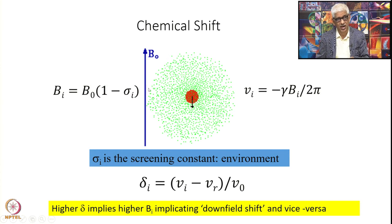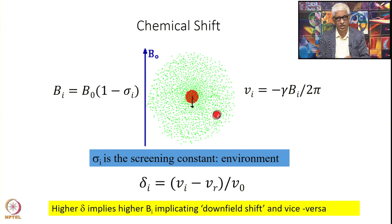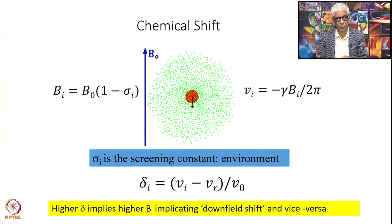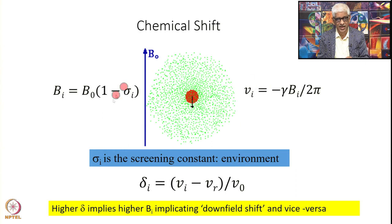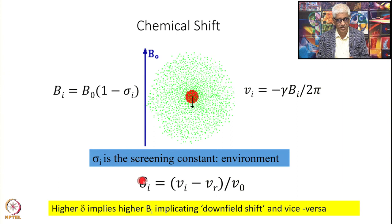Sigma_I is the screening constant, which can vary depending upon the environment of your molecule. The precessional frequency of a particular nucleus, omega_I, or in terms of frequency in Hertz, is minus gamma times B_I divided by 2 pi. Since this depends on magnetic field strength, to characterize only the screening or electronic environment around the nucleus, we define delta_I, equal to (nu_I minus nu_R) divided by nu_naught.